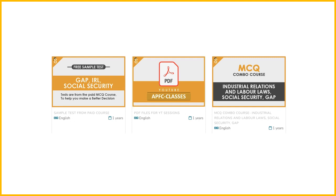Before starting, I'd like to tell you that whatever PDFs are in the YouTube description link, you can subscribe for them at a very minimal cost. If you have the MCQ combo course for industrial relations, labor laws, social security, and gap MCQs, you will get it included, with 50% off if you use the code UPSCEPFO.